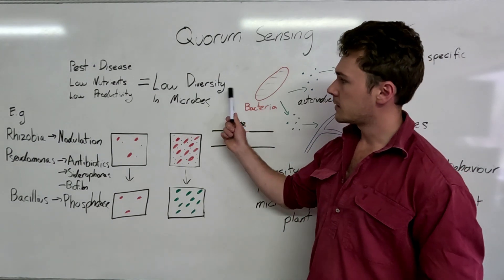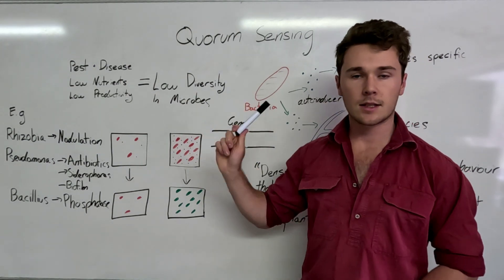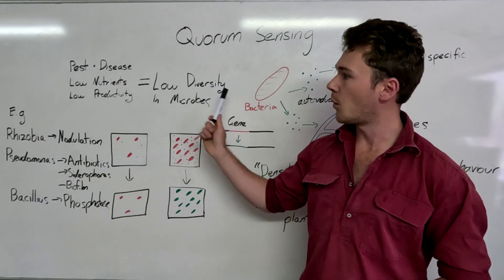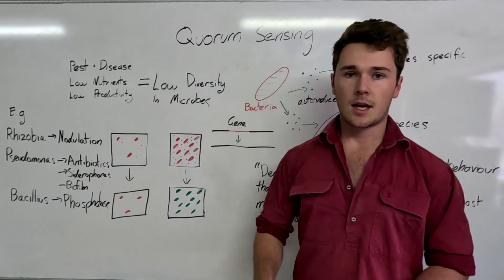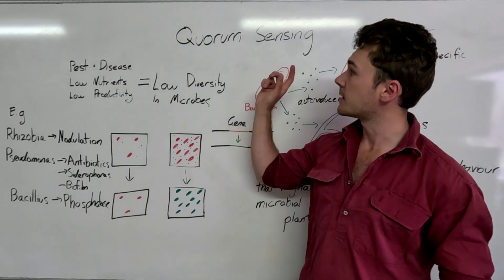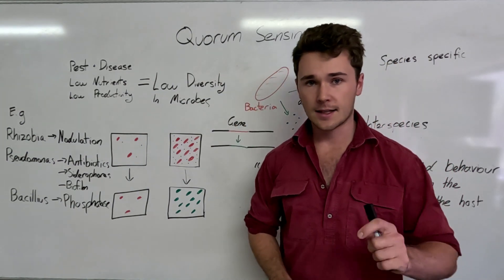But the question is why is low diversity in our microbes important and how does that affect these things? And so one of those explanations is found in quorum sensing and we'll get into that now.